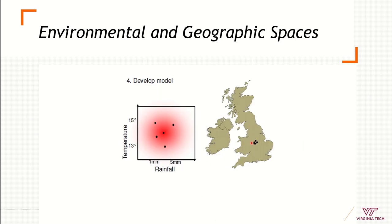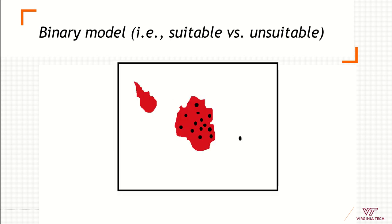We take information from geography, calibrate the model in terms of rain and temperature, and build a continuous model in environmental space showing highly suitable to less suitable areas going to the edges. I can project this model to geography, for example as a binary model showing suitable versus not suitable. With a good model like this one, in my study area the independent points that I did not use to calibrate the model are being predicted fairly well. There is one area where the model predicts with no data, and one point not predicted — but considering the study area and that most points were predicted, I believe this model is better than random.